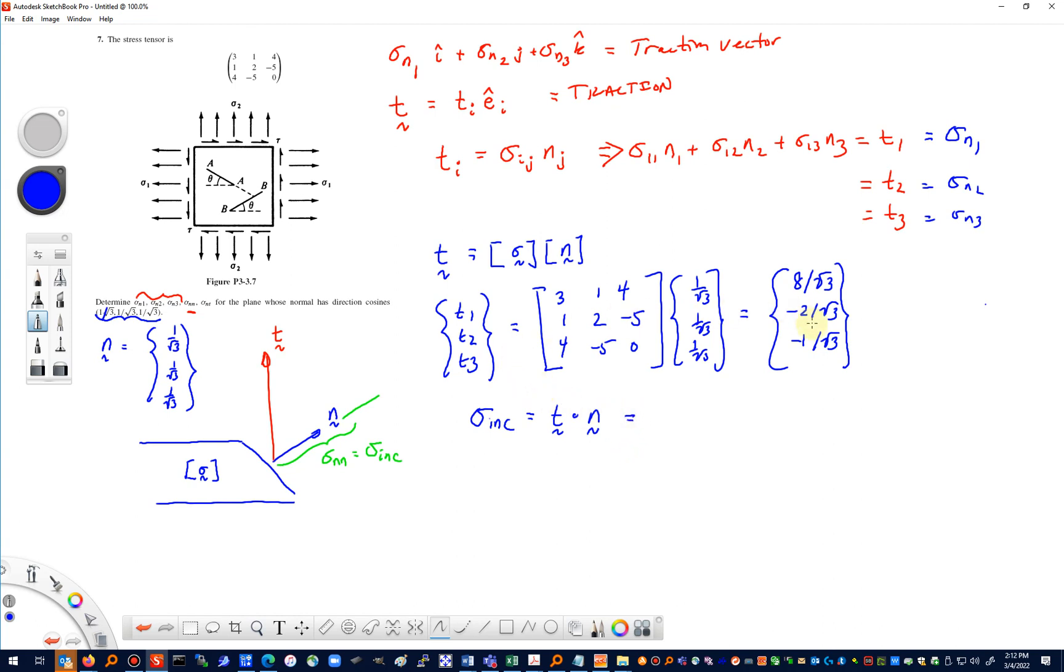We have the t vector and our n vector, so we're going to have 8 over 3 plus minus 2 over 3 plus minus 1 over 3. All together when I add those up I get 5/3. So that is the value of the stress on the incline plane, σ_nn or σ_inc.